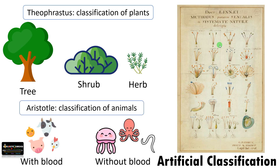Let's take one more example to make it clear. Aristotle classified animals into 'with blood' and 'without blood.' A single character is considered for classification. So this type of classification is called artificial classification, where one or two characters — easily observable characters — are considered for classification.